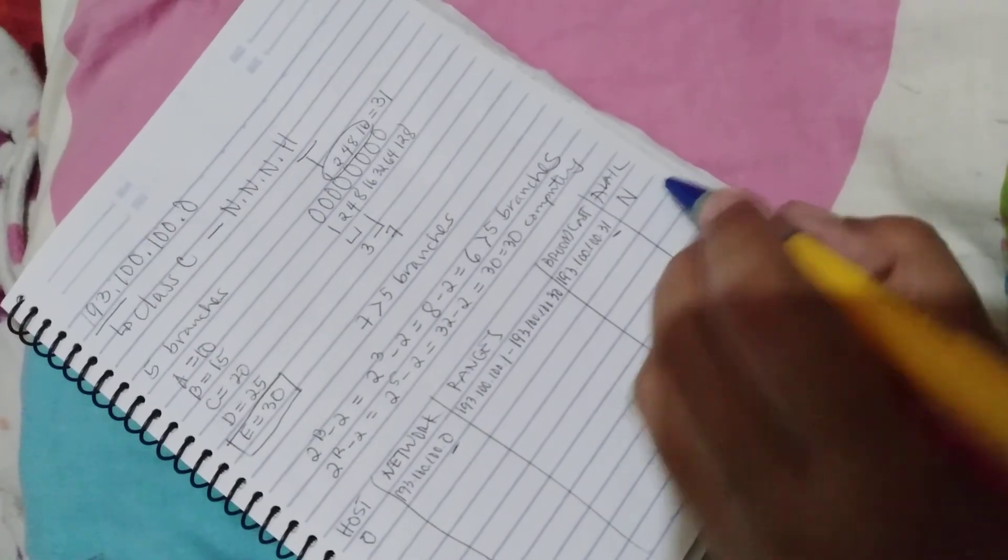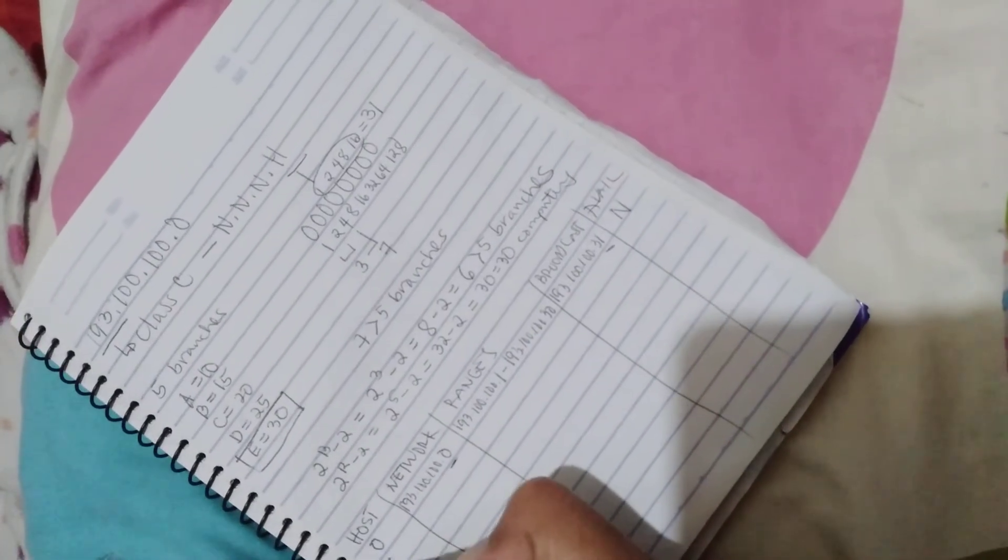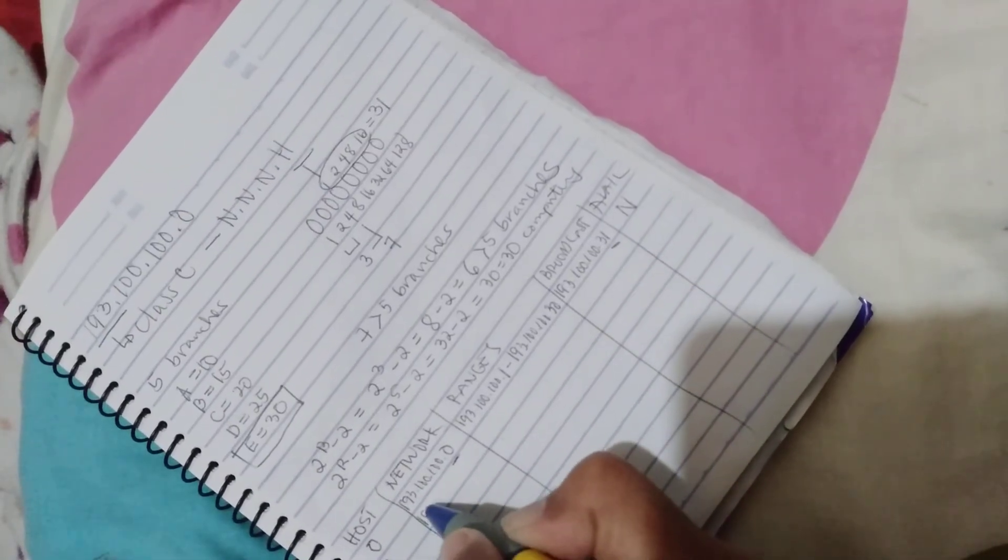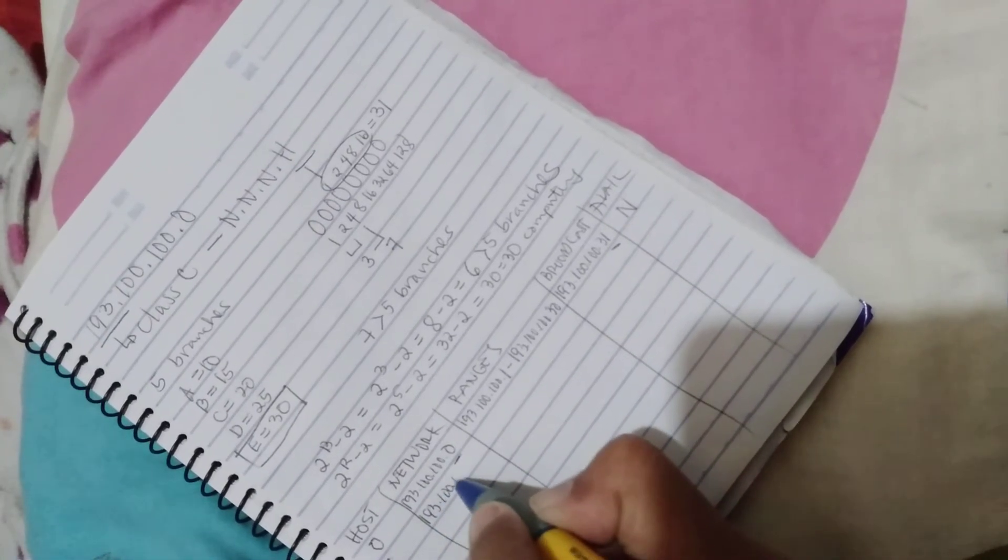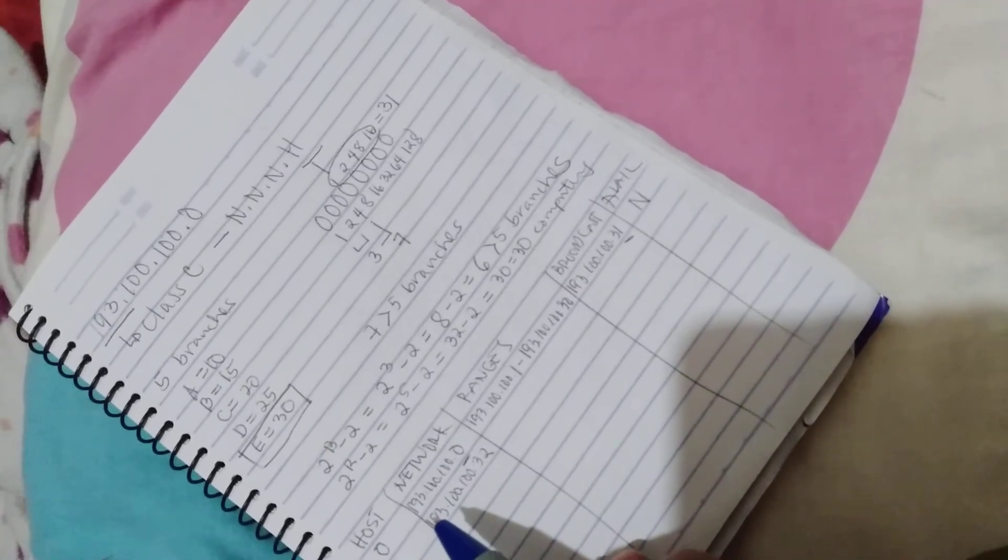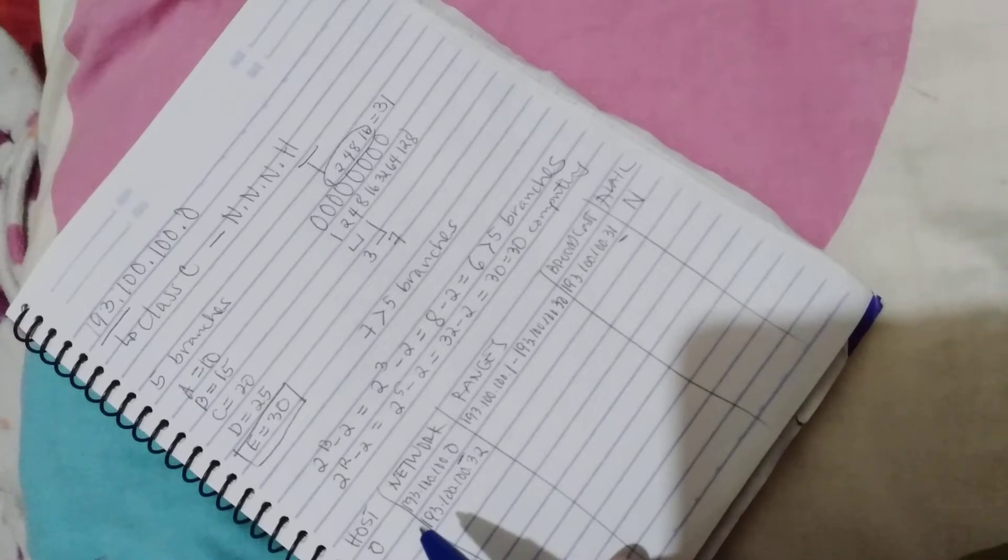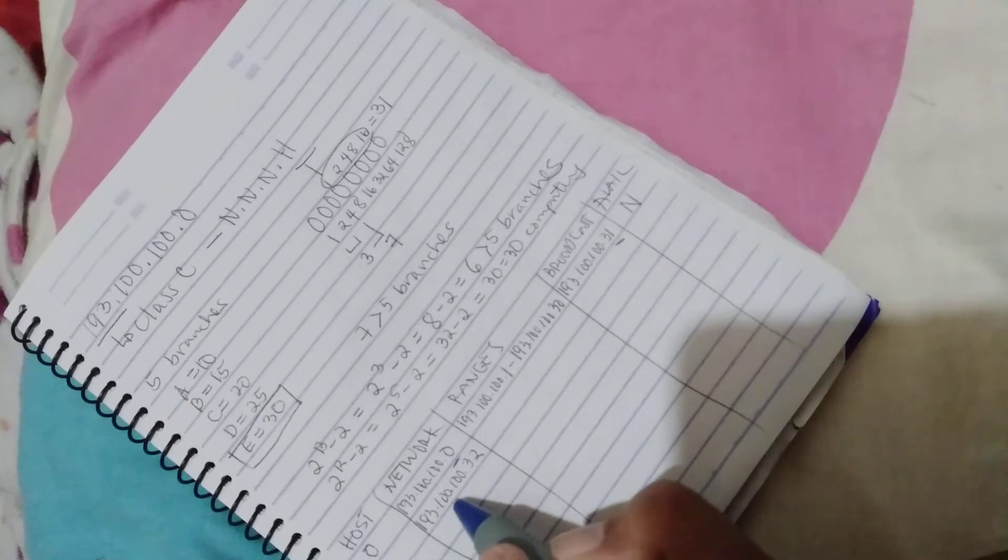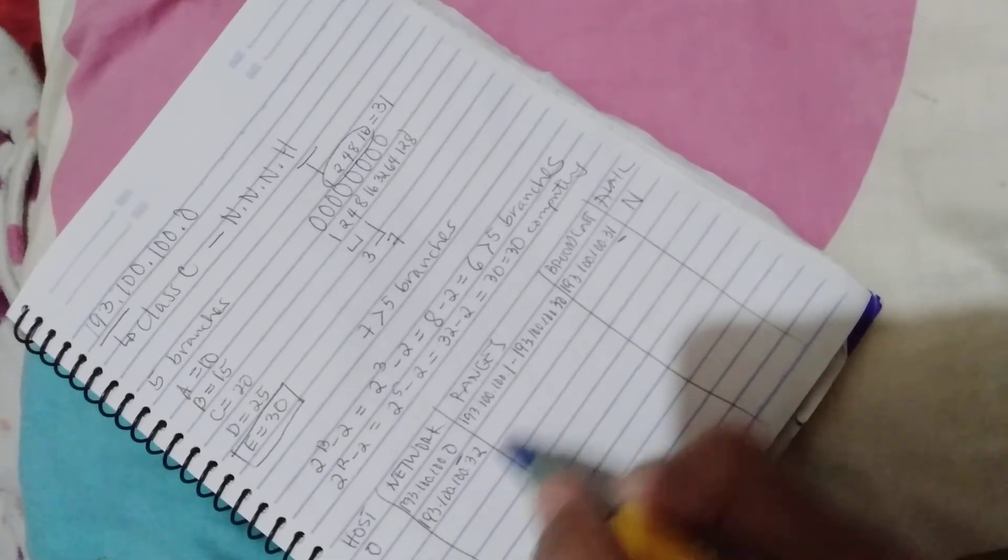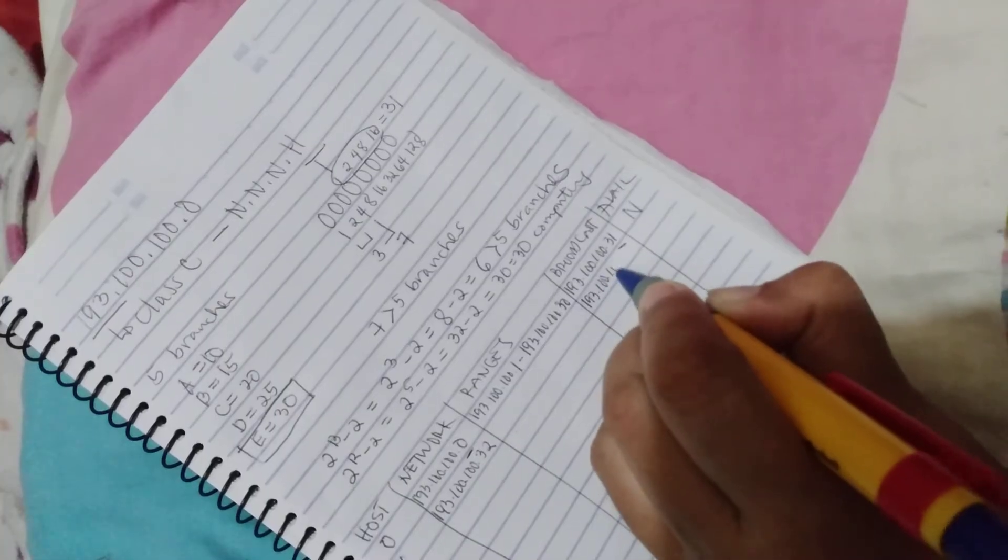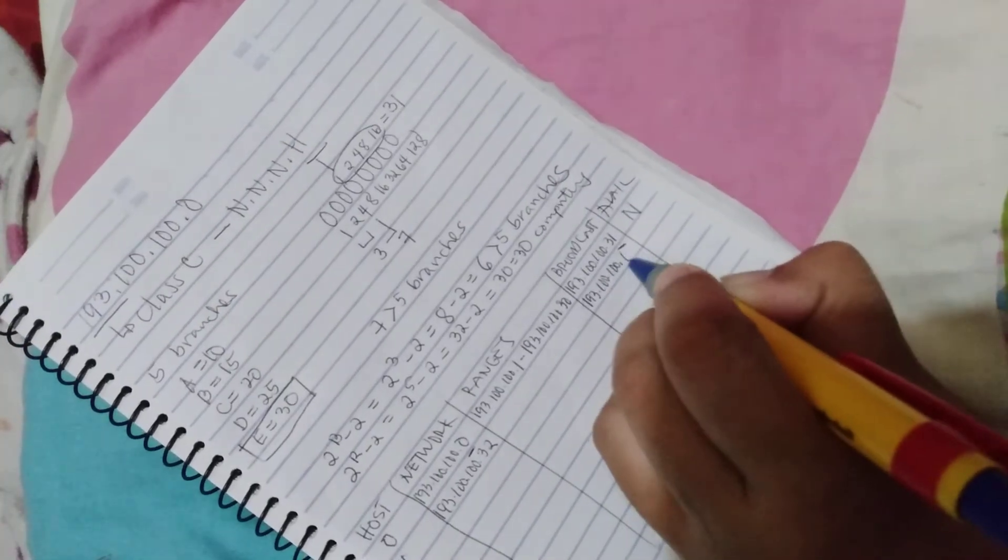Go to host 1. Since this is 31, the next network is 193.100.100.32. To get the next broadcast, you need to add 31 to 193.100.100.32, so that is 193.100.100.63.